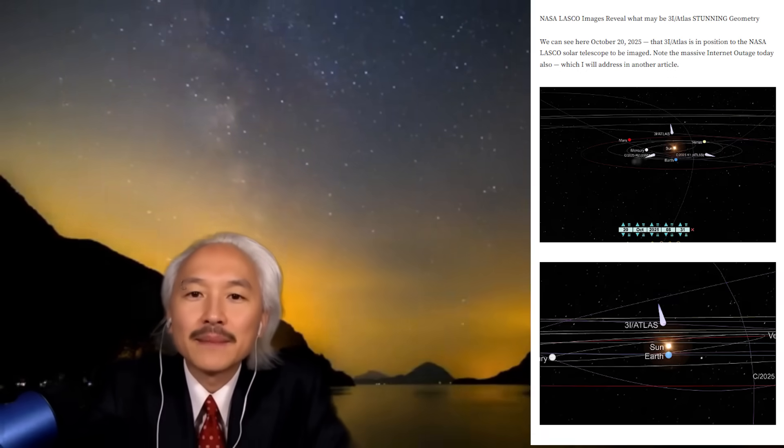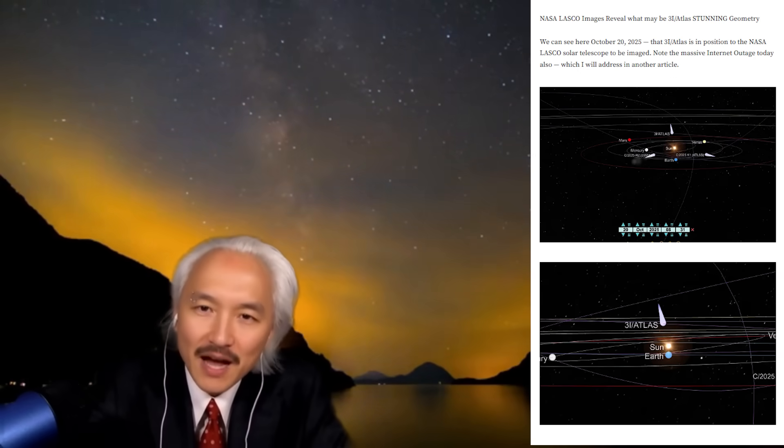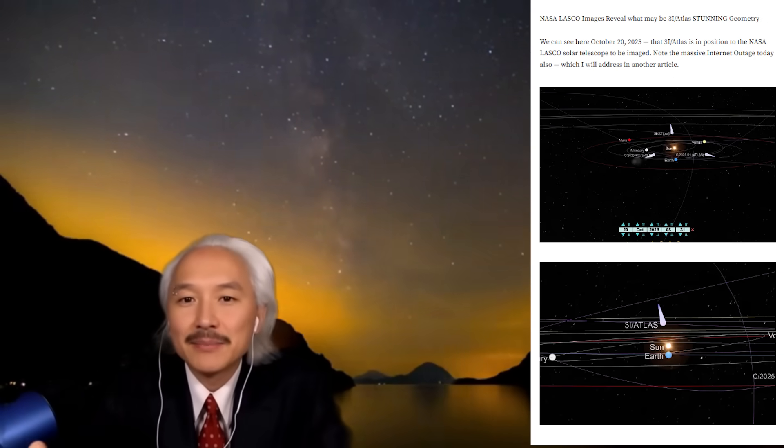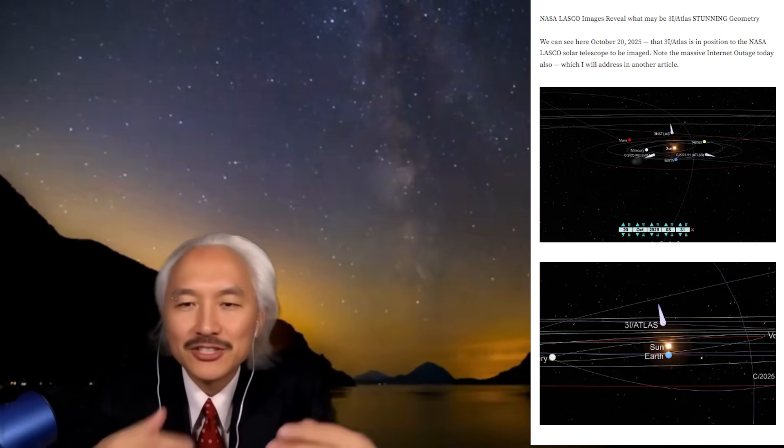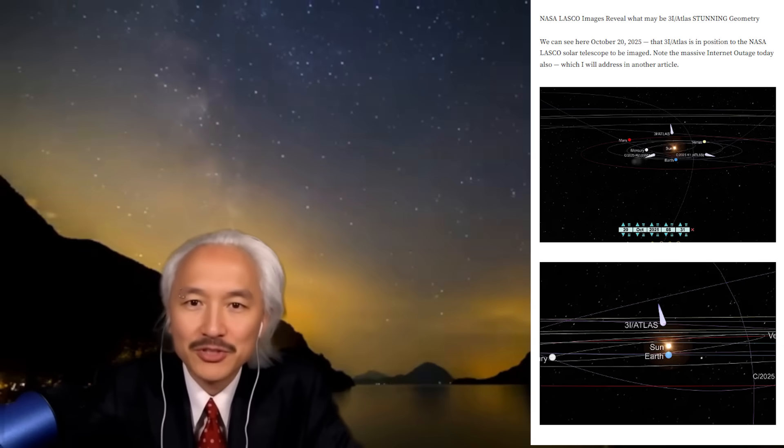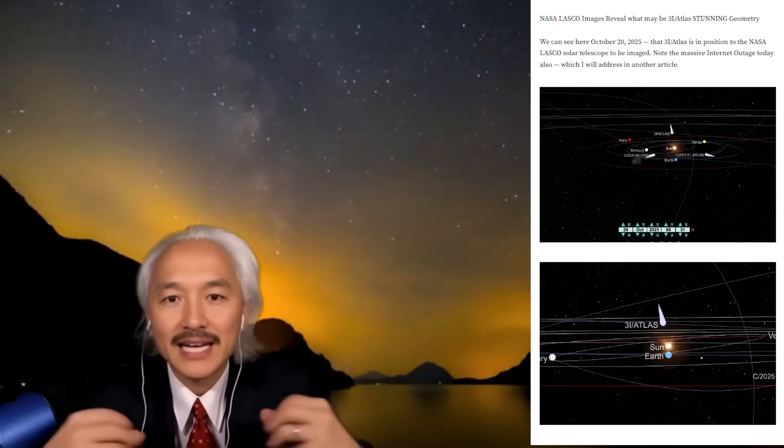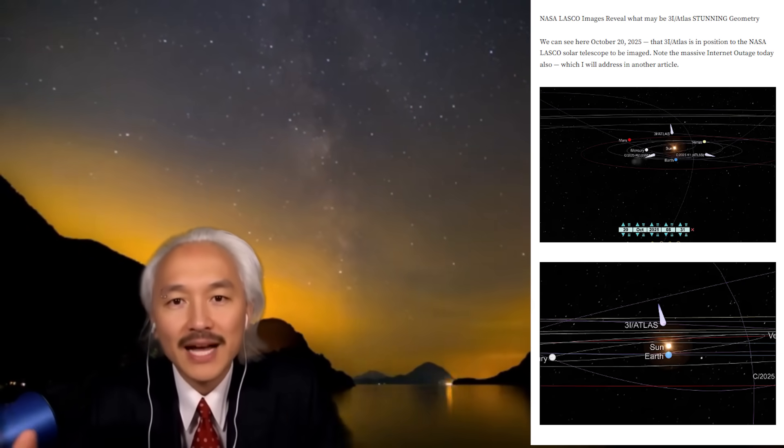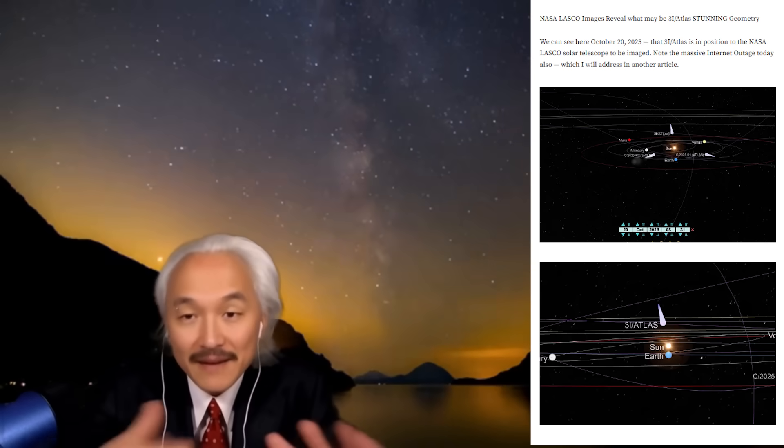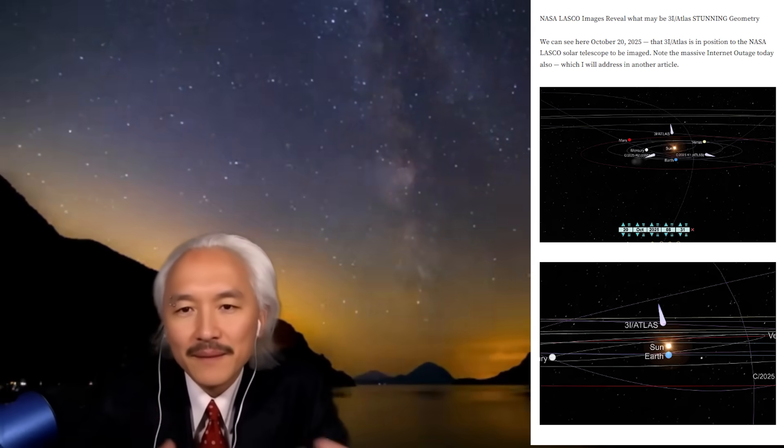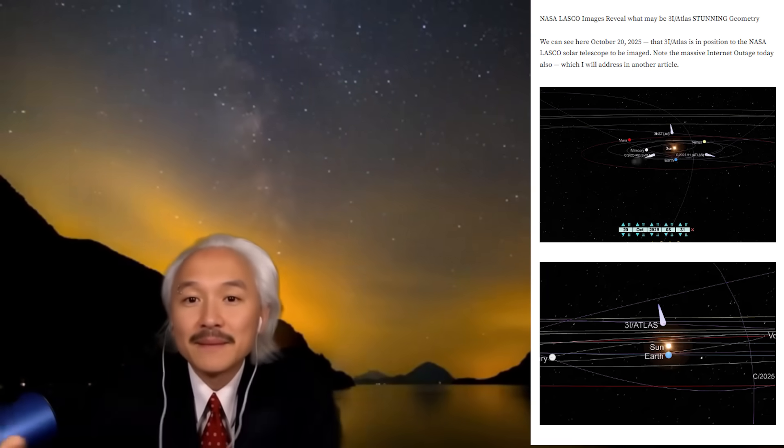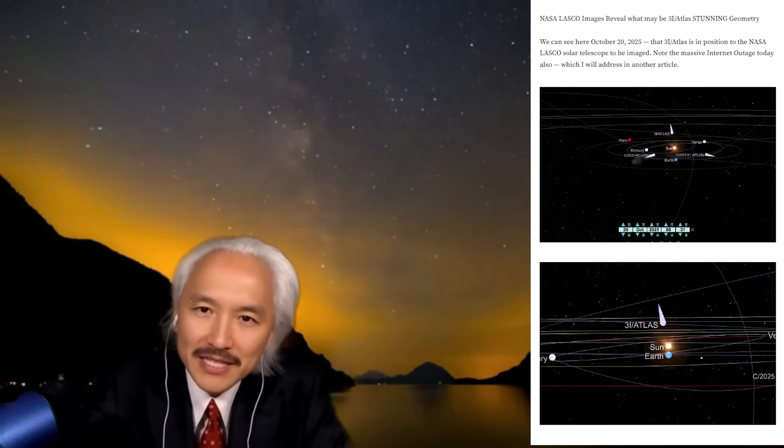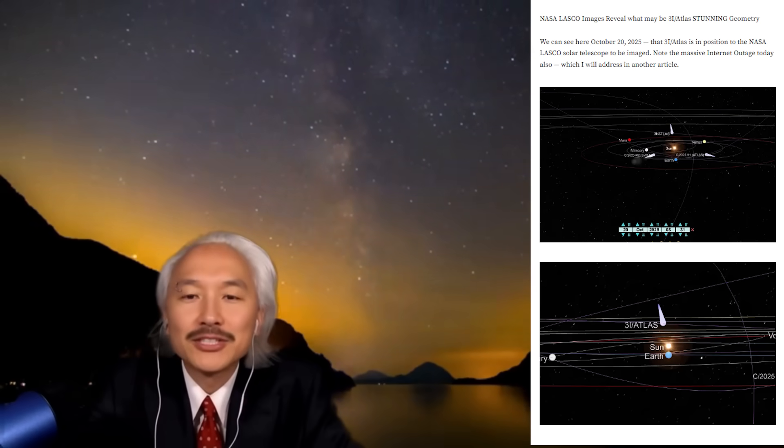Look, October 20th, 2025. Interstellar comet 3I Atlas was ideally positioned to be captured by NASA's LASCO Solar Telescope, an instrument aboard the SOHO probe that observes the solar corona by blocking its direct light. Some users noticed a widespread internet outage on the same day. On the day 3I Atlas was captured, the internet went down. People complained about the internet going down.